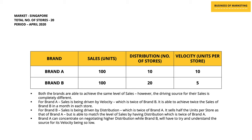What is interesting to note is that both brands are able to achieve the same level of sales. However, the driving source for their sales is completely different. Brand A has twice the velocity of brand B, and as a result, despite having half the distribution, it is still able to achieve sales of 100. On the other hand, brand B has twice the distribution of brand A, and therefore, despite having half the velocity, it is still able to achieve total sales of 100.